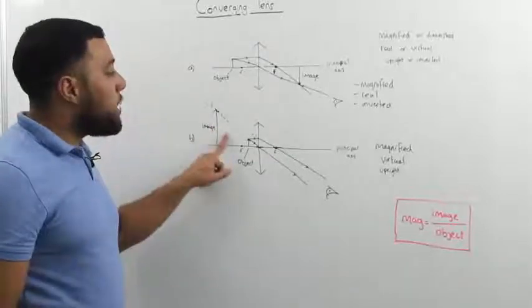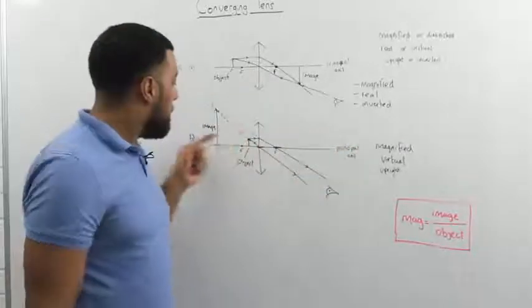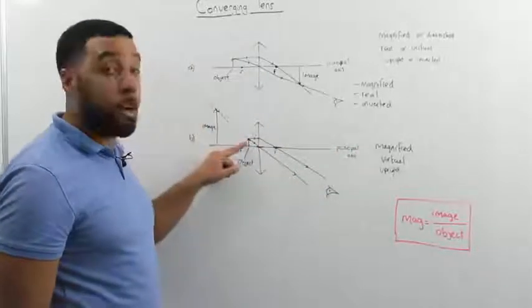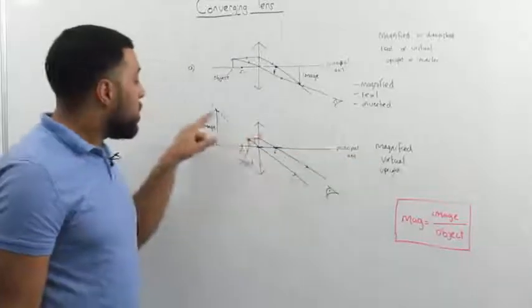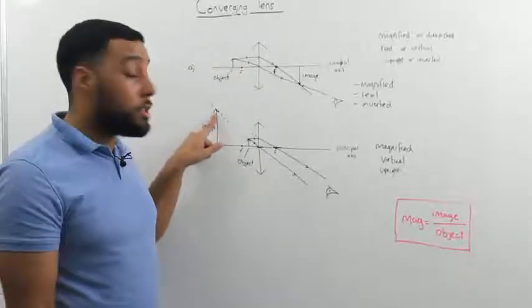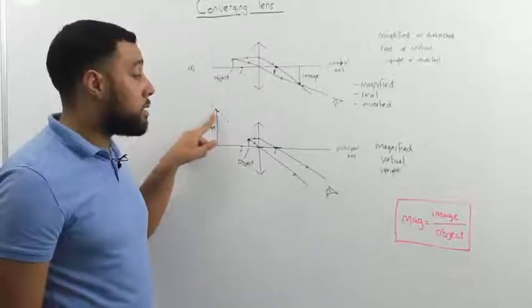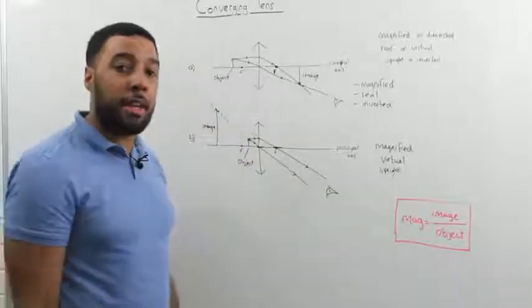Straight away we can tell that the image here is magnified because it's much bigger than the object. It must be virtual because the rays of light never actually met. They appear to meet behind the lens. And the image is also upright. It's facing the right way up. It's not upside down.